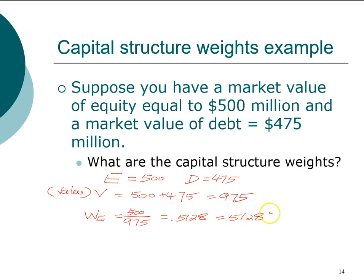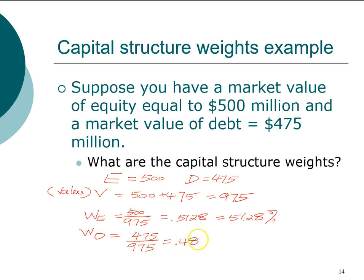The weight of debt is 475 million divided by the total of 975 million, which equals 48.72 percent. The important thing to remember is that we need to base the weights on market value rather than historic book value, to the best of our ability.